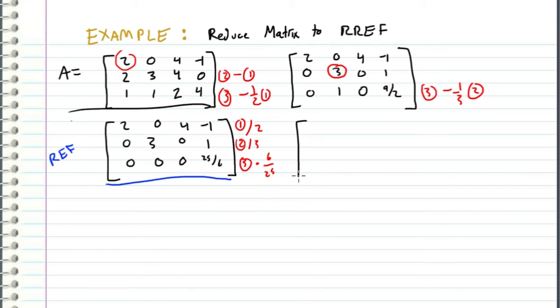So what we get is 1, 0, 2, negative 1 half, and then we have 0, 1, 0, 1 third, and then 0, 0, 0, 1.